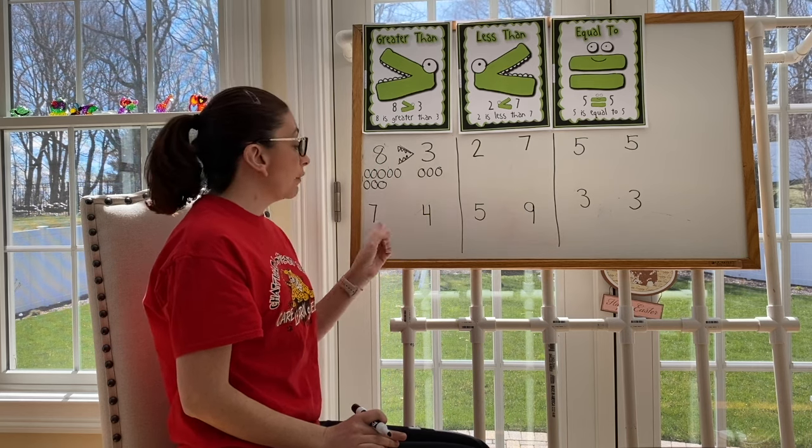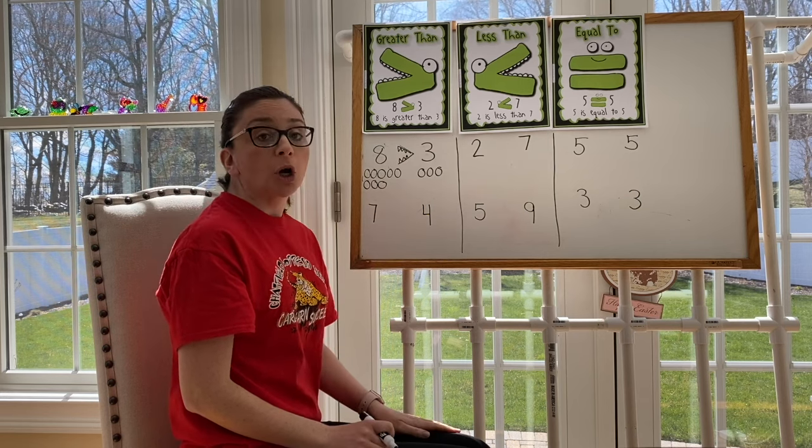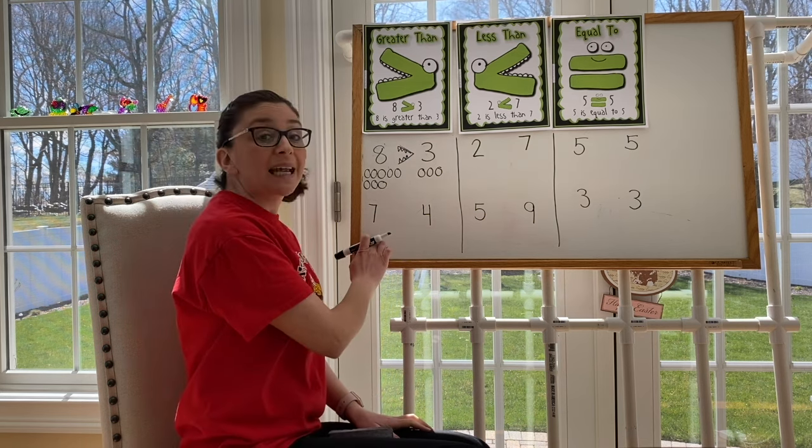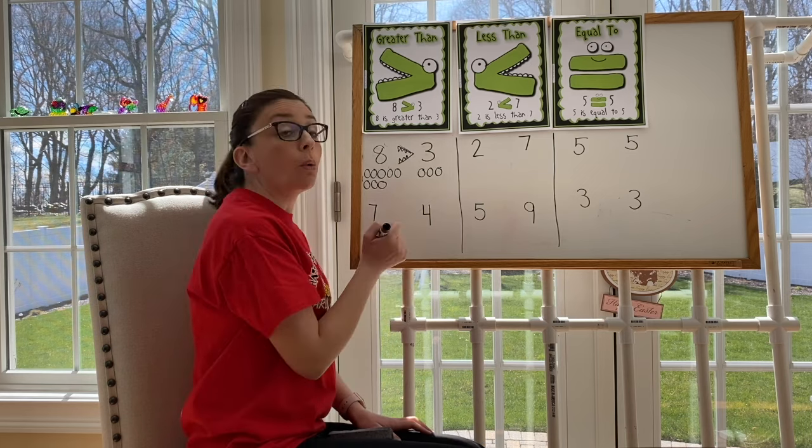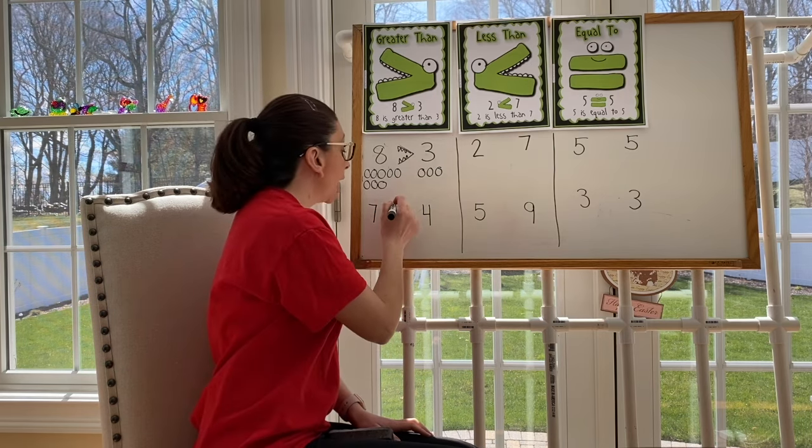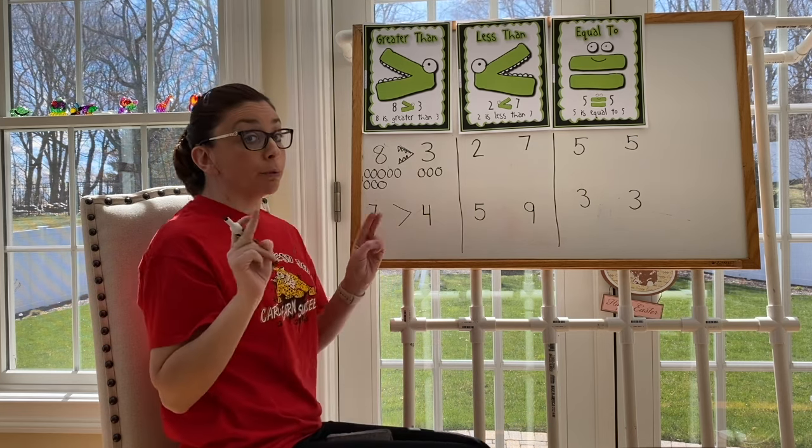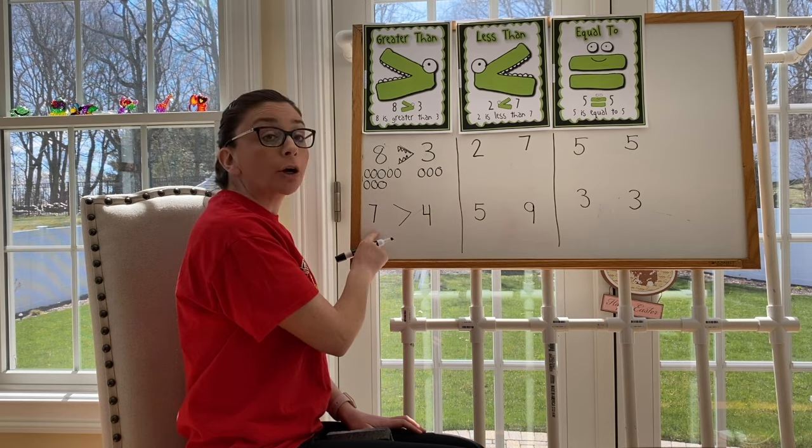Let's look at another example. Seven and four. Which number is greater? Seven is the greater number. It has more. So when I draw my arrow, I need to make sure the big end of my arrow, or my pretend alligator mouth, is facing the bigger number.